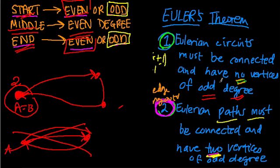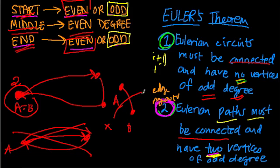Of course, the vertices also have to be connected. We can't have a disconnected graph, because the goal is to get from one vertex to every other vertex in the graph. If you have two separate components — say X and Y separate from A and B — there's no way of interacting between them. That's disconnected, so we can't create a circuit or a path; we can't get from A to X or Y, or complete any kind of circuit or path whatsoever.